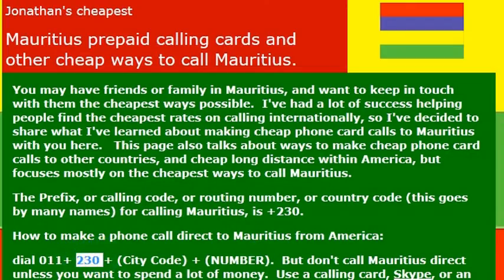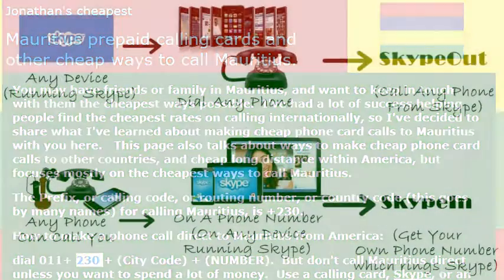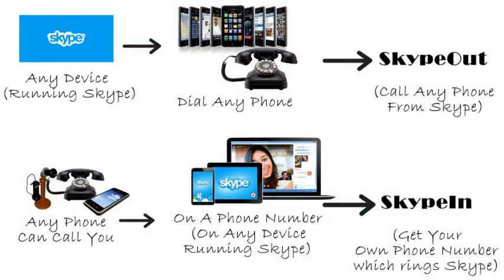The country code for Mauritius is 230, but I wouldn't really recommend calling direct — your phone company will charge you a lot of money. If you want to call internationally, I really recommend using Skype. We detail how to make free and low-cost calls using Skype in other videos.